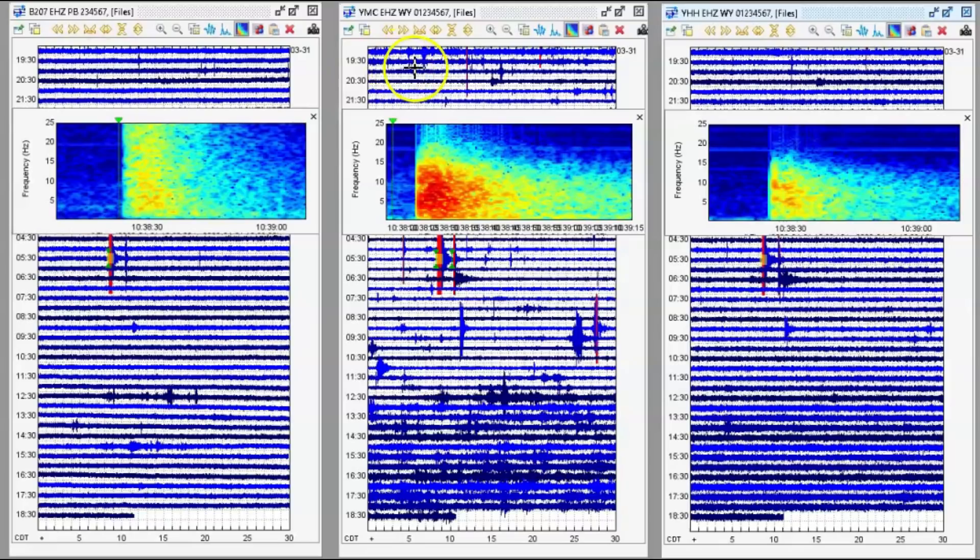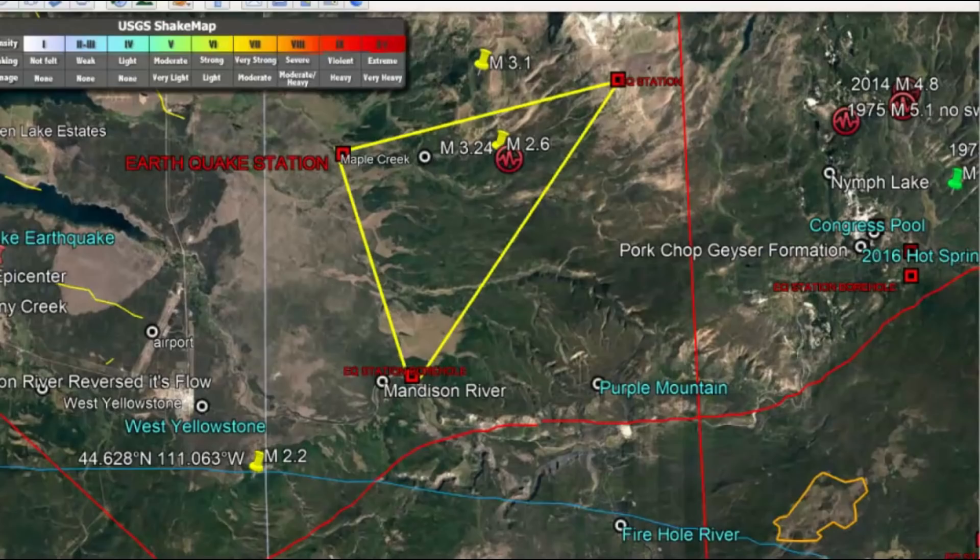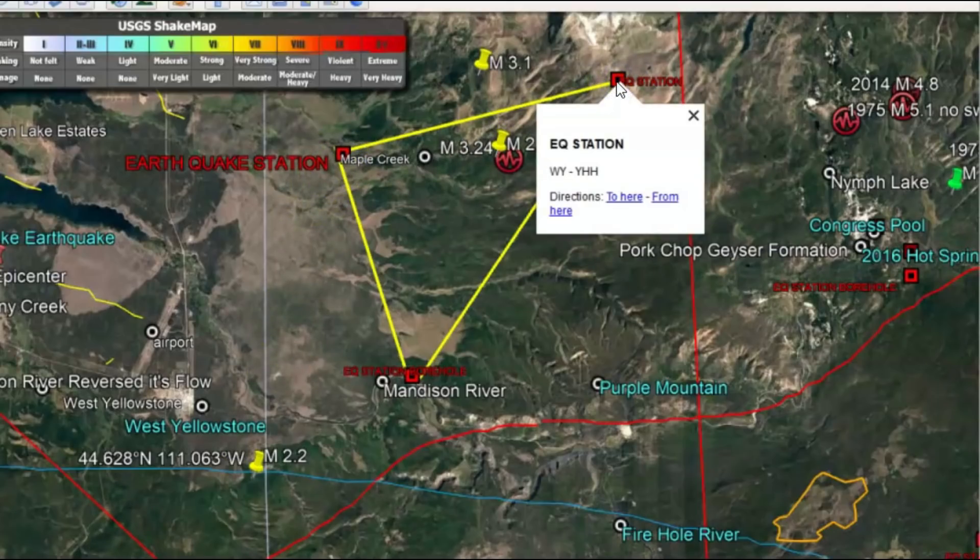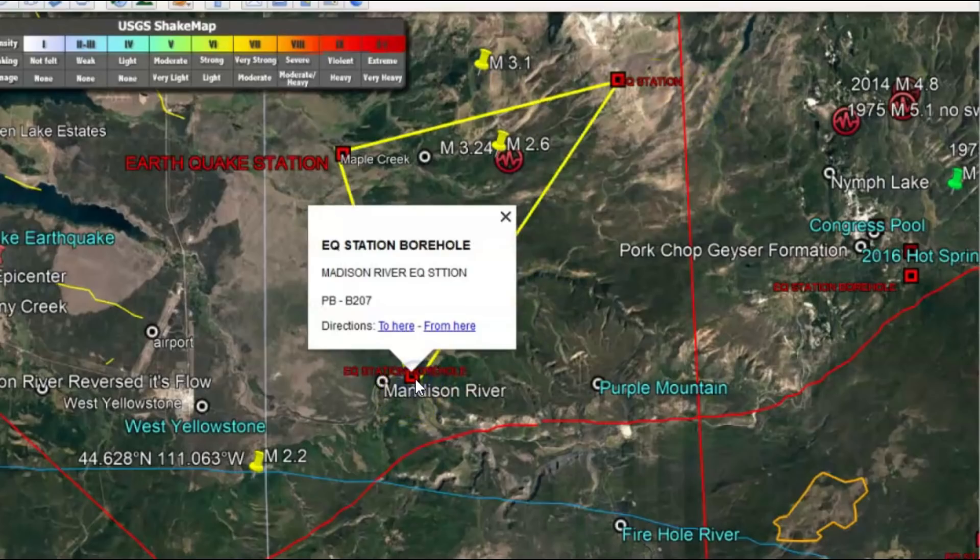So here I downloaded the borehole for the Madison River area. Borehole 207 in the center is Maple Creek and over here is Holmes Hill. Going to Google Earth, here's the location for Maple Creek. This one here is Holmes Hill.